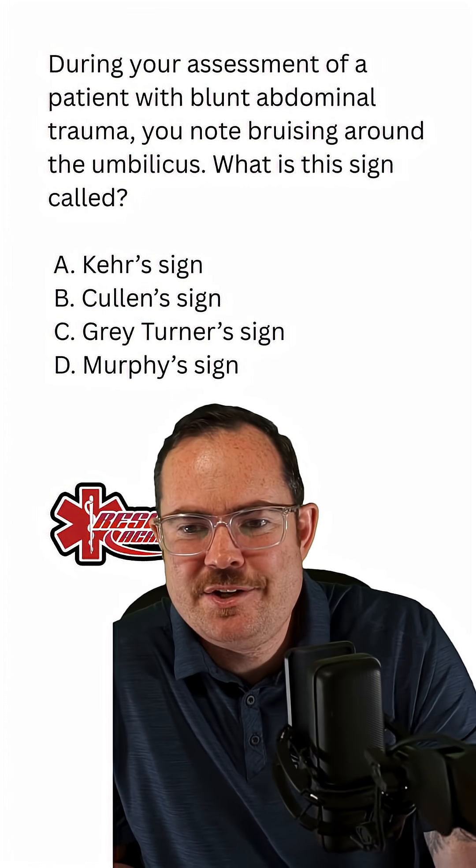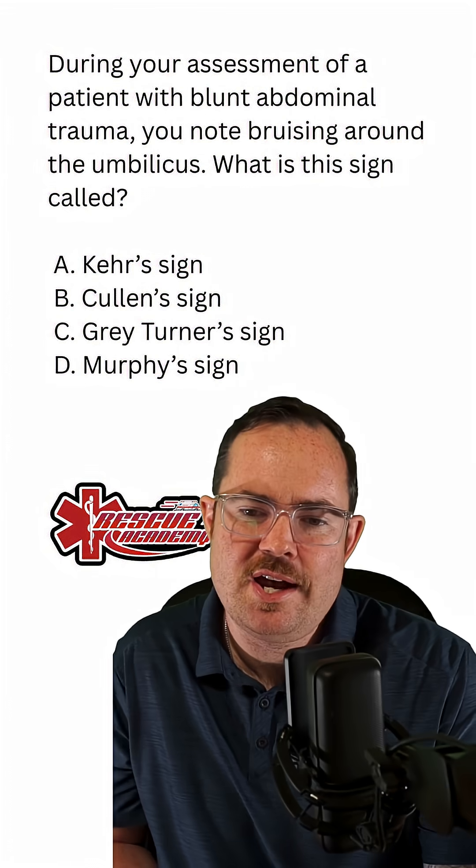Would it be A, a Kehr sign? B, Cullen sign? C, Gray-Turner sign? Or D, is it a Murphy sign?